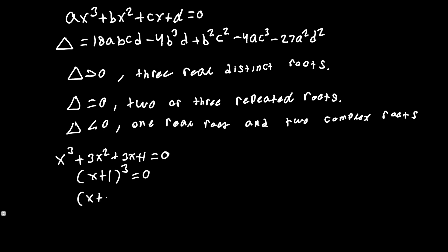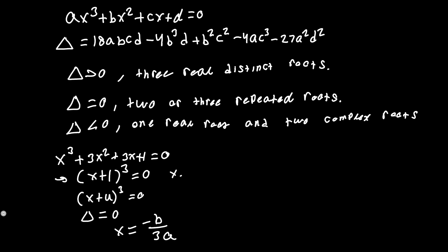So (x + u)³ = 0 always has a discriminant of 0. Whenever this is the case — when the discriminant is 0 and the cubic is a perfect cube — the solution is always x = -b/(3a).